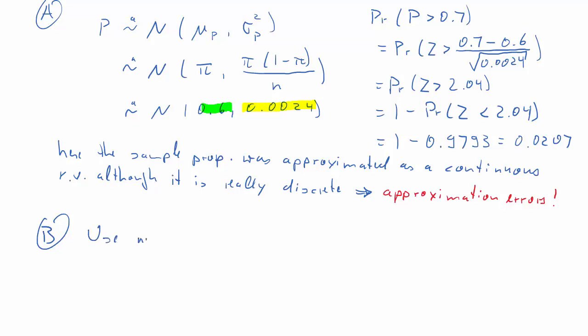The second way to approximate, and that is a somewhat better approximation, is the following. Rather than using the proportion, we use the number of car owners. So, we define that as T, that is the sample size, times the proportion. So, it's the number of successes, if you think of a car owner being a success in a binomial experiment.